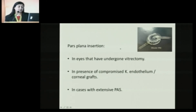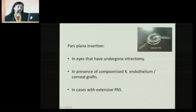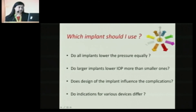Pars plana insertion of the implant is indicated in eyes that have undergone vitrectomy, in the presence of compromised corneal endothelium or grafts when you don't want the tube to touch the endothelium and damage the graft, and in cases when there is hardly any space in the anterior chamber, such as extensive synechiae.